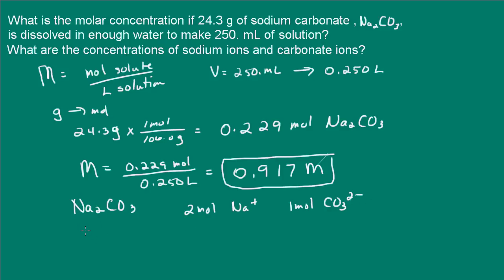So what we have here is we have a solution that is 0.917 molar. So that means the concentration of sodium ions is going to be 2 times 0.917 molar. That will be 1.83 molar in sodium ions.